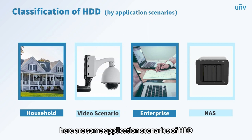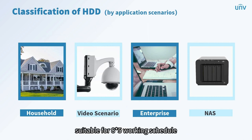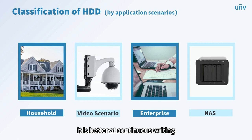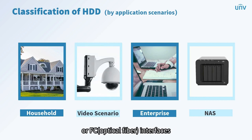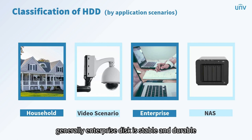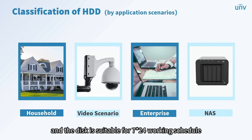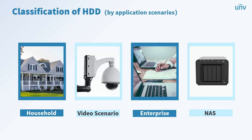Here are some application scenarios of HDD. Household hard disk is an ordinary hard disk for home use with a SATA interface, suitable for an 8x5 working schedule and not for continuous work. The second kind is used for general video devices with a SATA interface, suitable for a 7x24 working schedule; with poor random reading performance, it is better at continuous writing. The third is enterprise hard disk, used in servers with SAS or FC interfaces — stable, durable, with the highest reliability, a special shockproof chip, stronger error correction, and suitable for 7x24 operation. NAS hard disk is used by homes or small businesses for network storage, also with a SATA interface.